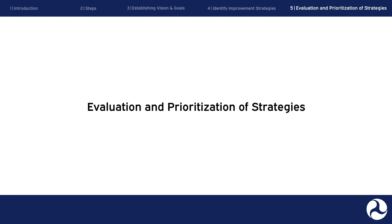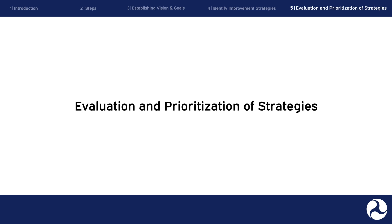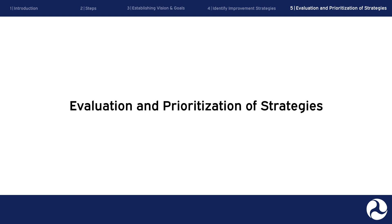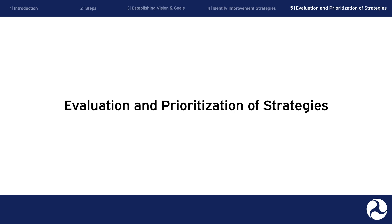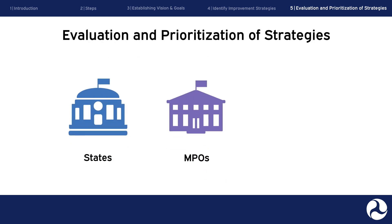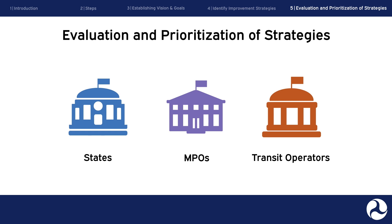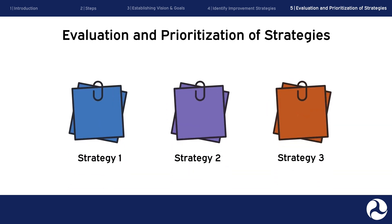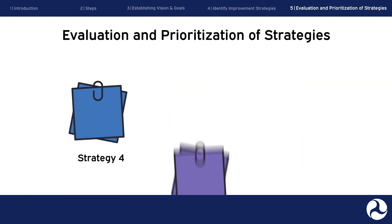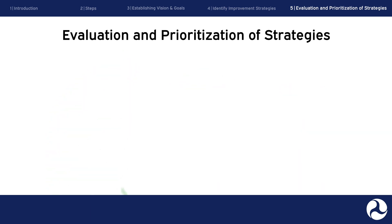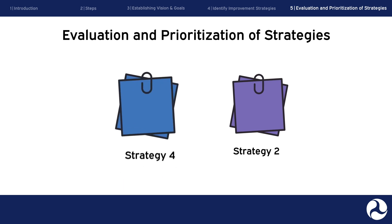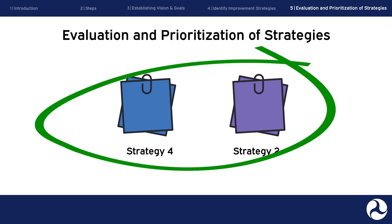Evaluation and Prioritization of Strategies. After identifying improvement options, those strategies must then be evaluated and prioritized to align with available resources and community interests. Prioritization is a cooperative process among states, MPOs, and transit operators for identifying projects and strategies from the most recent 20-year Long-Range Metropolitan Transportation Plan, or MTP, that are sufficiently high-priority and ready for delivery to be included in the TIP. What strategies will best align with your organization's vision or goals? What strategies will be the most popular or impactful to your community? What strategies are the most cost-effective or efficient? These are some of the questions you will be asking yourself as you move through this process.